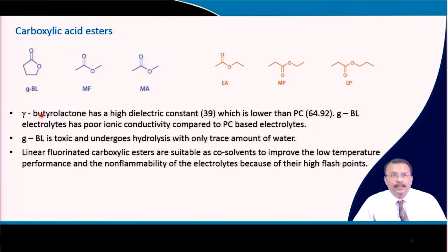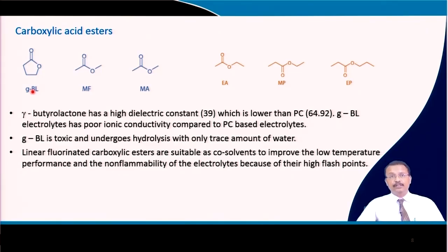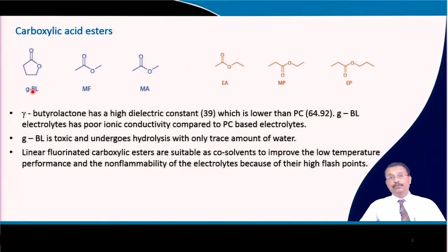Esters are also used — for example, gamma-butyrolactone (GBL) has a higher dielectric constant of about 39, which is lower than PC, but has poor ionic conductivity compared to PC-based electrolyte. It is also toxic and undergoes hydrolysis if trace amounts of water are present. Linear fluorinated carboxylic esters are suitable co-solvents to improve low-temperature performance and non-flammability of electrolytes due to their high flash point.